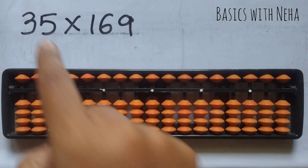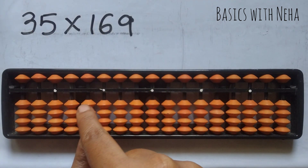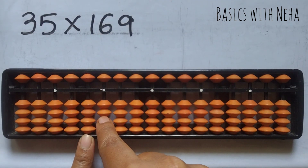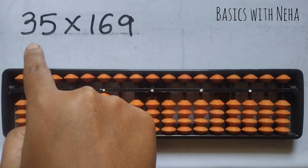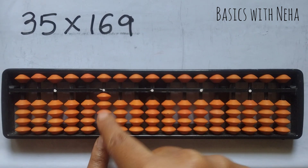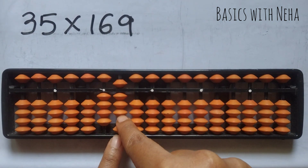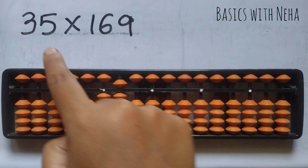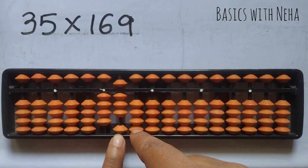Now 3 ones are 3. It will be 0, 3. Then 3 sixes are 18 — 1, 8. And 3 nines are 27.